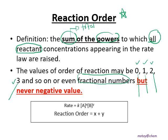However, the order of reaction can never be a negative value. So if you want to find the order of reaction involving reactants A and B, you just need to total up the powers X and Y.